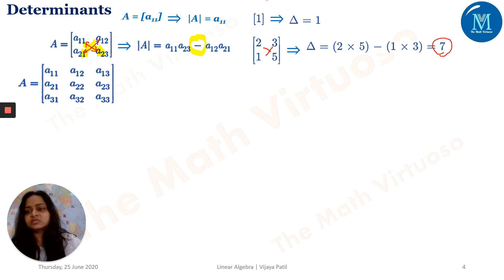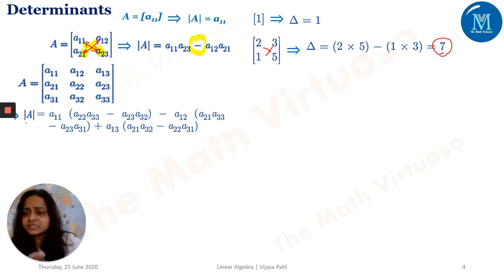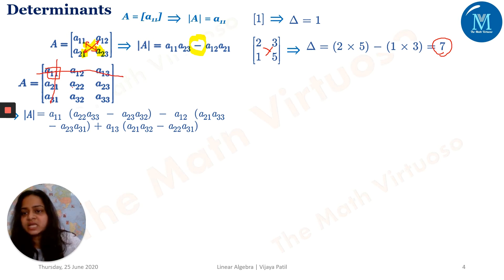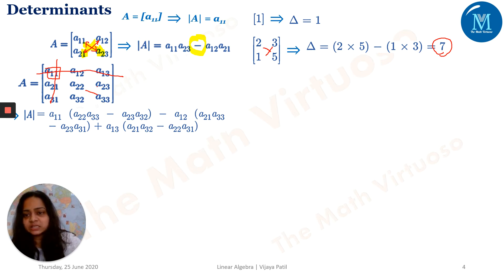Now let's go to a 3×3 matrix: A11, A12, A13 and so on. The determinant is found by expanding along the first row. For A11: I hide the first row and first column, and take the 2×2 determinant of the remaining elements — that is A22×A33 minus A32×A23. So the first term is A11 times that 2×2 determinant.